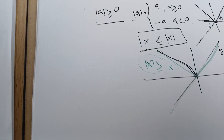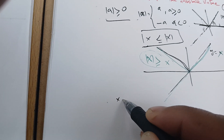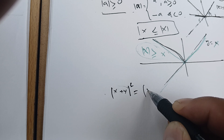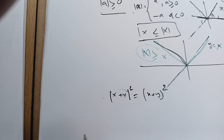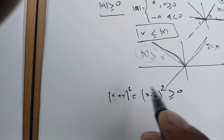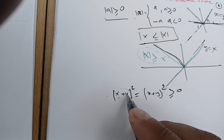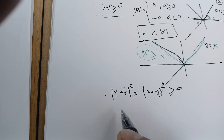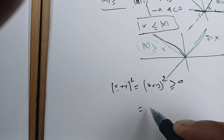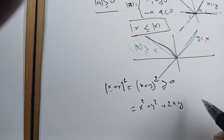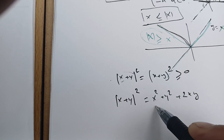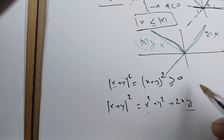To prove the triangle inequality, we're going to square both sides. We take the square of the absolute value of x plus y. When we square it, the absolute value disappears because the result is positive. So we get x squared plus y squared plus 2xy. That means the absolute value of x plus y, squared, equals this quantity, and we're going to use this fact in our proof.